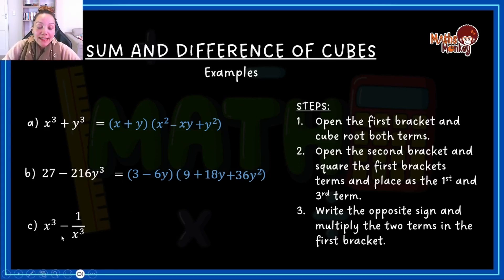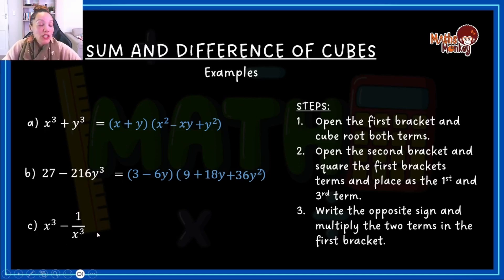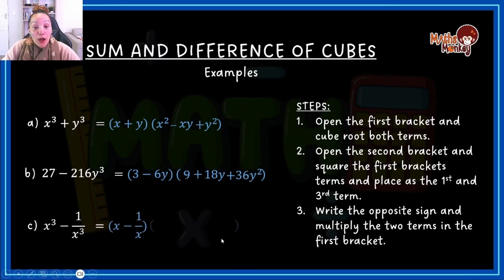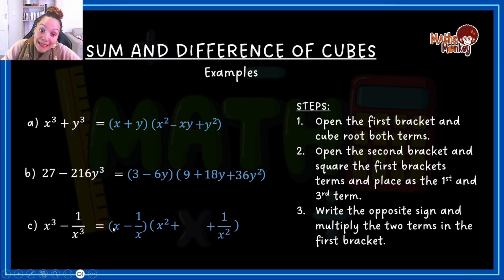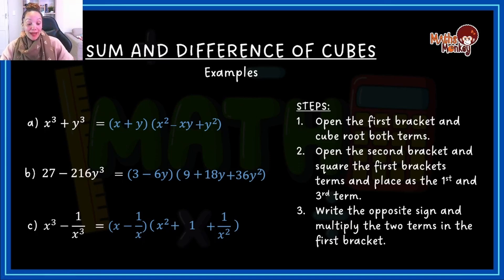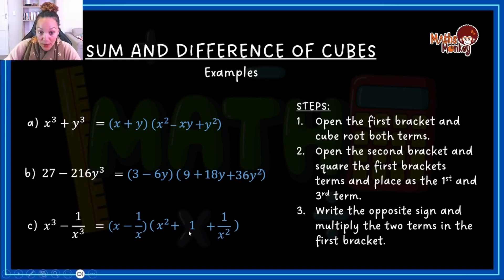Let's see if there's a fraction. If you get a fraction, it's only a cube if the top number and the bottom number are both cubes. In this case, 1 is 1 times 1 times 1, and x times x times x — so this is a cube. You apply the same method: open the first bracket by writing the cube root. Then open the second bracket, square the first term, square the last term, write the opposite sign, and then x multiplied by 1 over x — the x's cancel and you're just left with 1. So x over 1 times 1 over x, those x's cancel each other, and you're just left with 1 for the middle term.